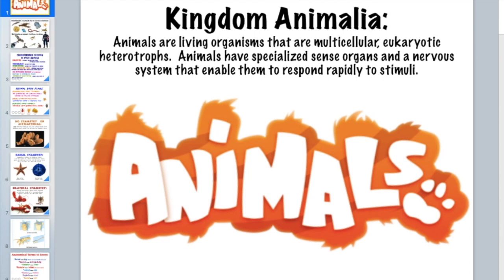The last kingdom of living organisms is Kingdom Animalia. Animals are living organisms, but the focus here is that they are multicellular — they have many cells — and they are eukaryotic, so they have membrane-bound organelles. They have a nucleus, and they are heterotrophs, so they eat other things and cannot make their own food using sunlight.